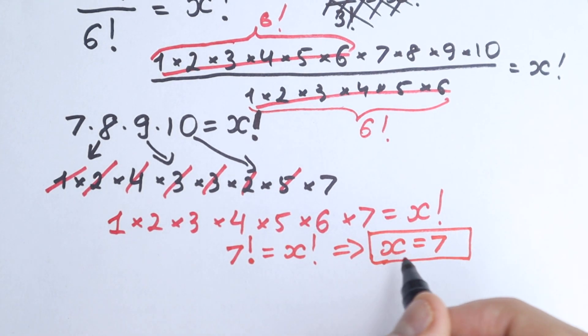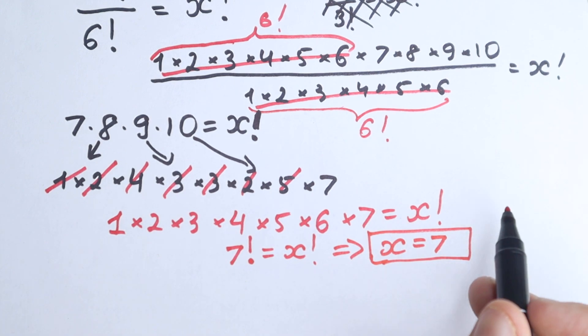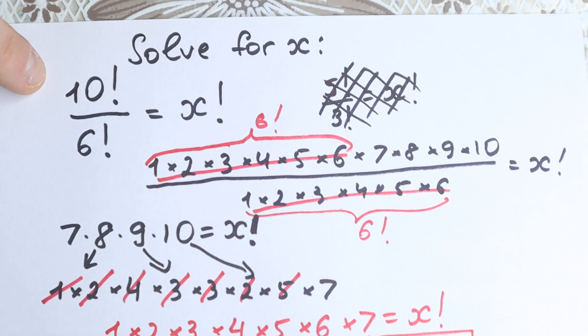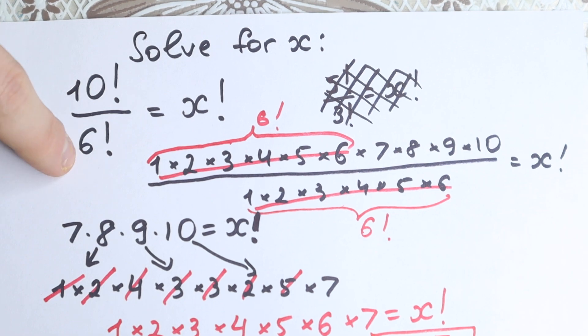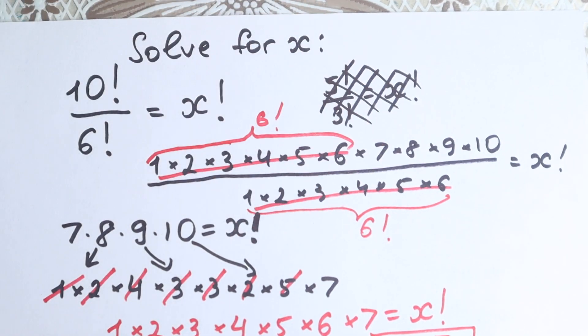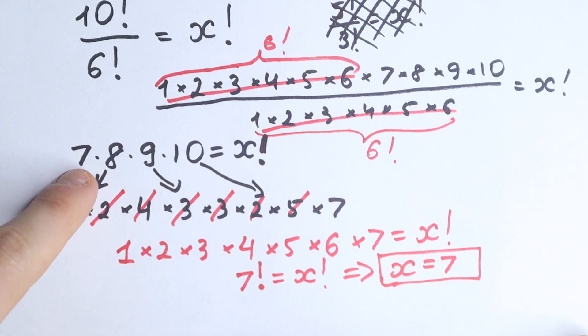And a lot of students got shocked with this answer, because one part of students, as I told before, they divide 10 and 6 by 2. We have 5 factorial over 3, which is very bad. The next part of students multiply this expression, and they say, okay,